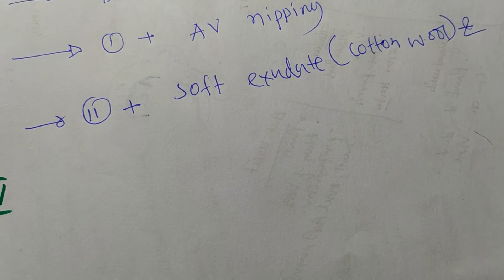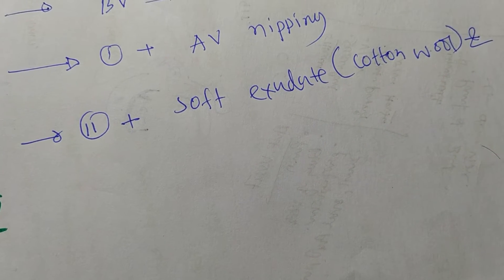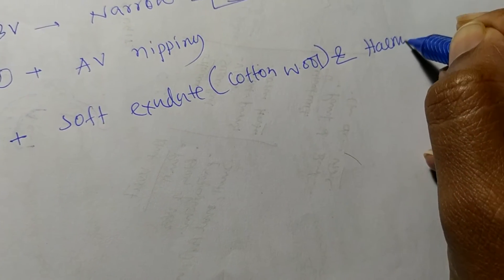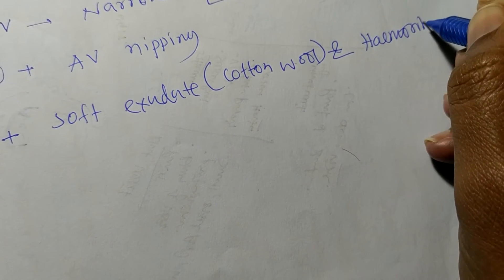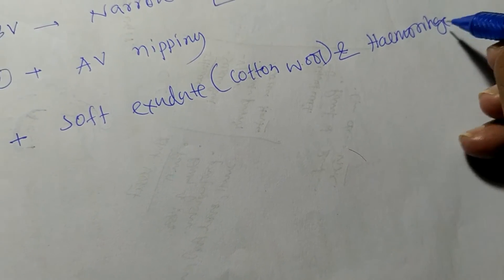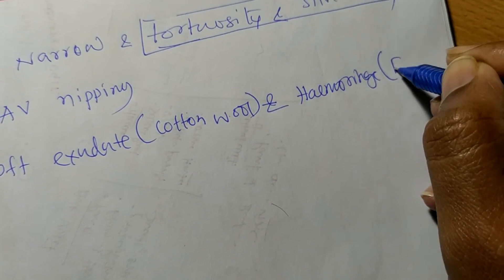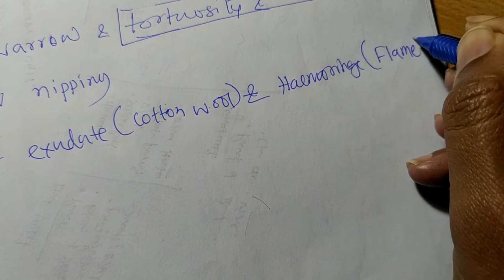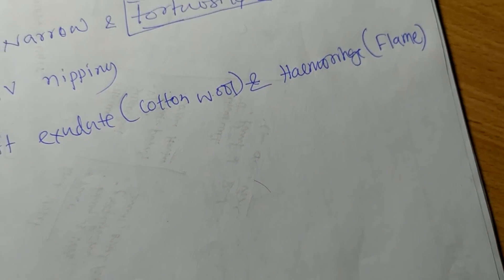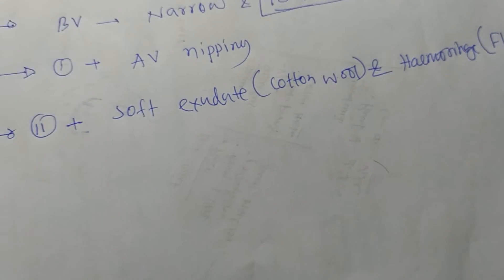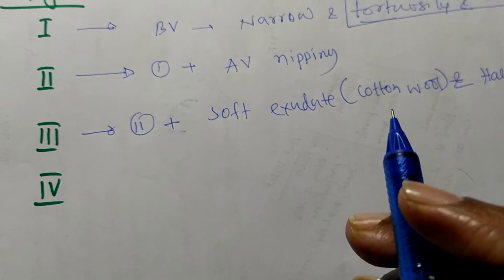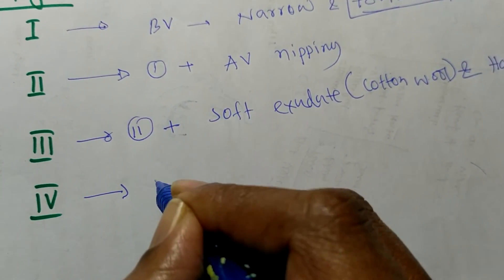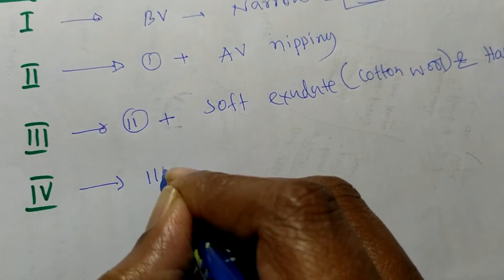Stage three means stage two plus soft exudate — soft exudate means cotton wool exudate — and hemorrhage. These hemorrhages will be flame-shaped hemorrhage.